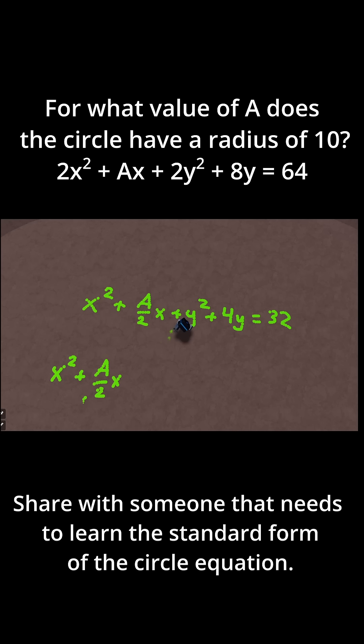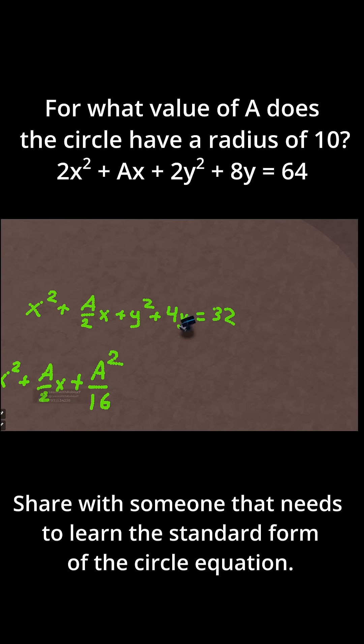So to do that, we complete the square. And the way you complete the square is you take the coefficient of the x term, that a/2, and you first divide it by 2. a/2 divided by 2 is just a/4. But then after you do division by 2, you have to square it after. So this just becomes a²/16. So all this means is that I need to add a²/16 to this side. If I add it to the left side, let's add it to the right side to be consistent as well. So I have 32 + a²/16.